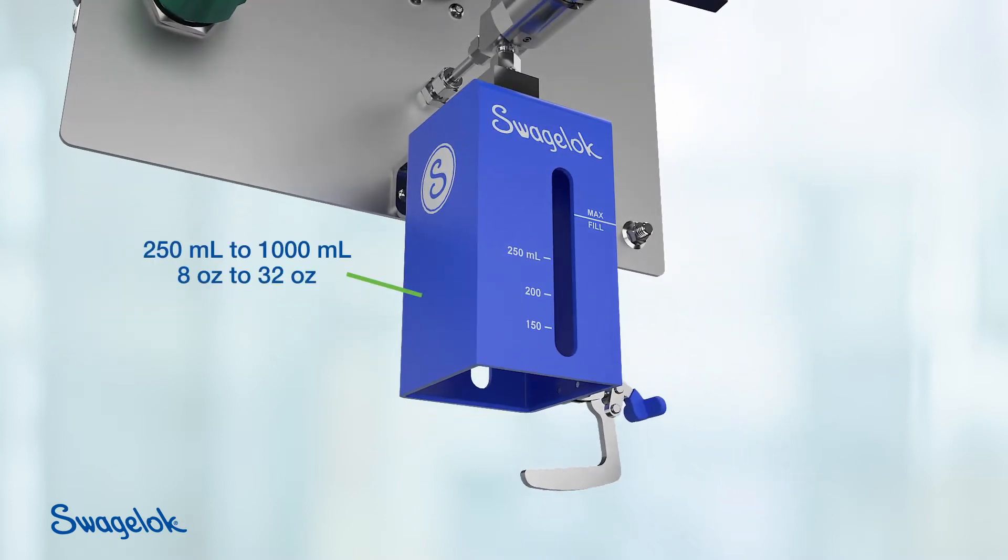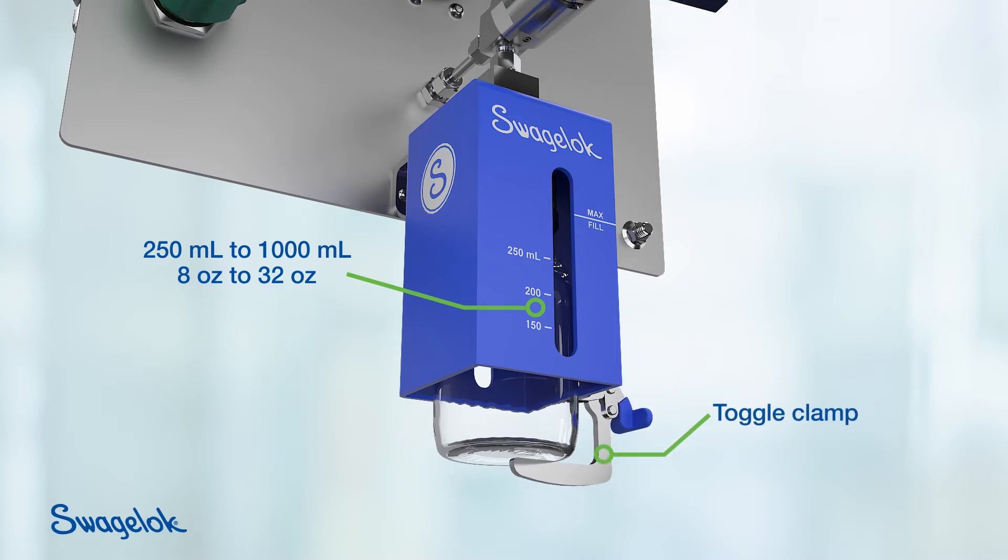The operator inserts the sample bottle into the shroud, which allows for proper alignment and holds it during the sample operation.